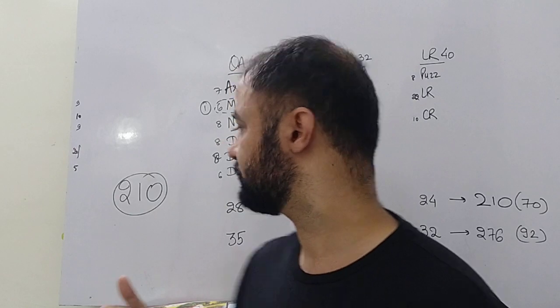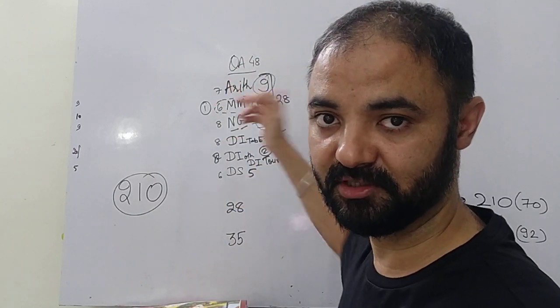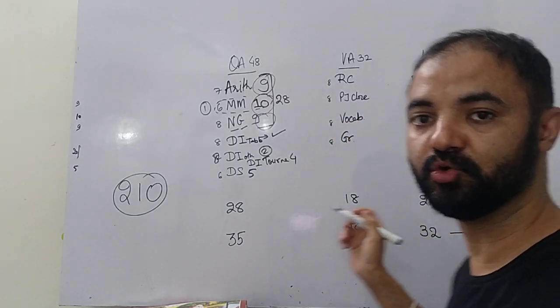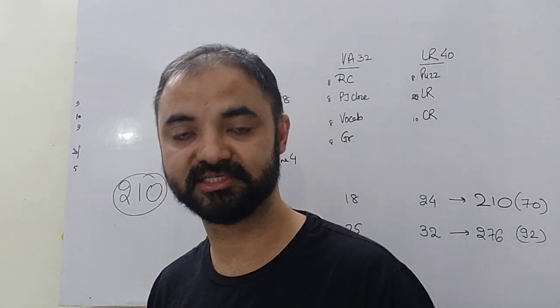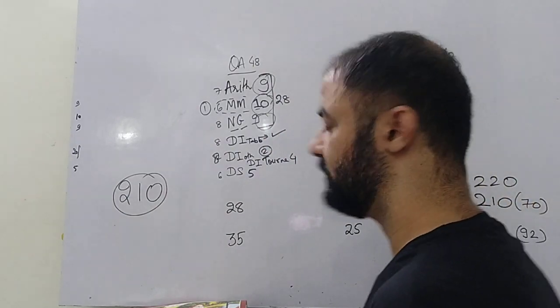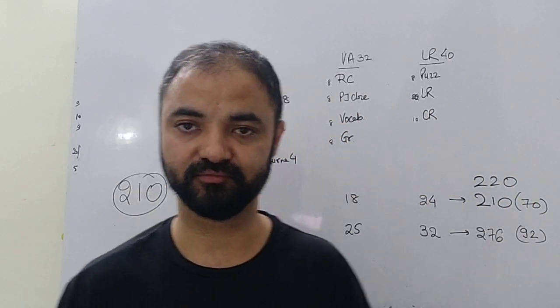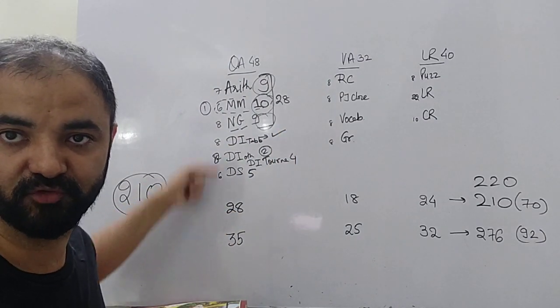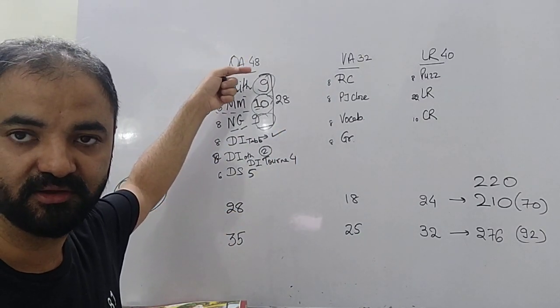Overall 48 marks. If you want to target 210 cutoff - I personally believe in 220 cutoff, 10 marks extra. If you want 210 cutoff, you have to get 28 questions correct out of 48 questions in quant. That's your target.